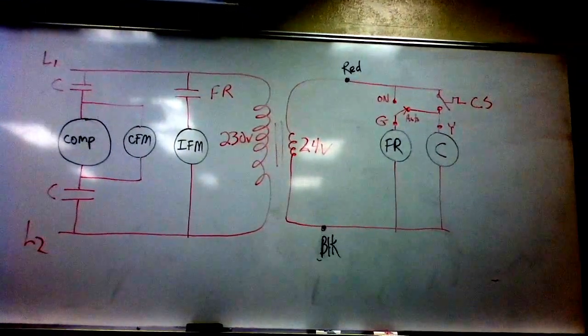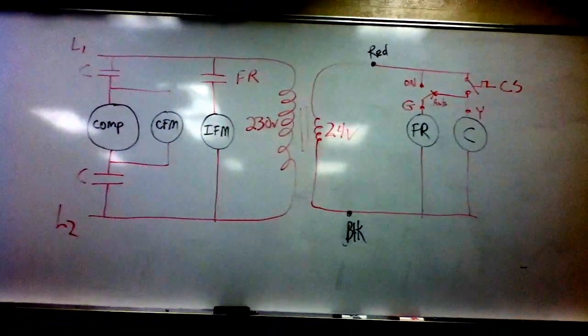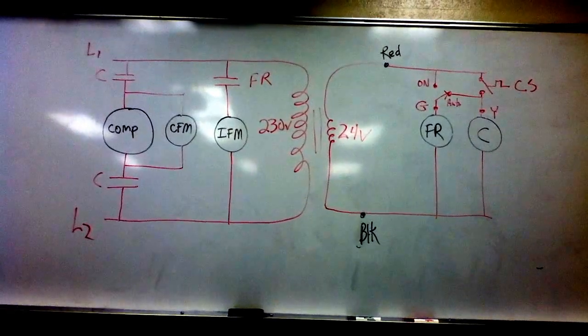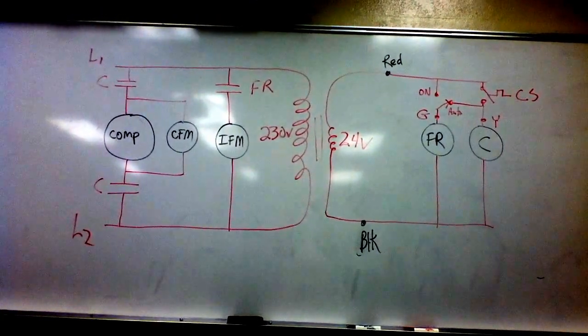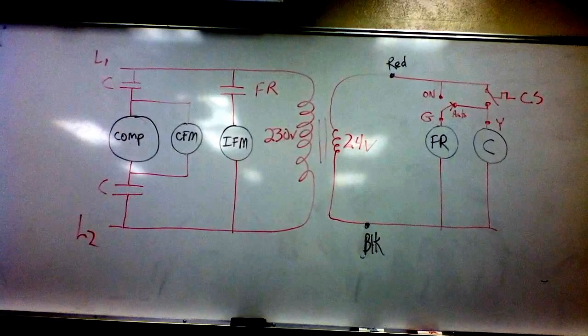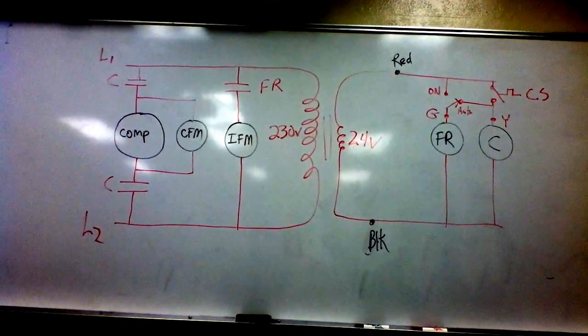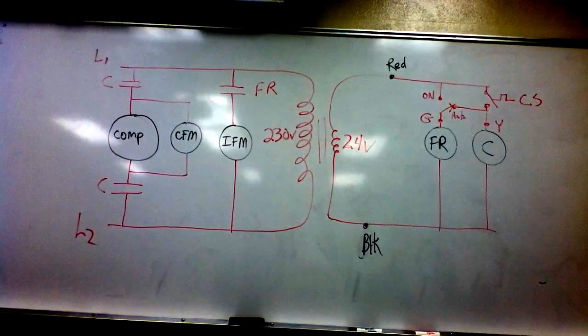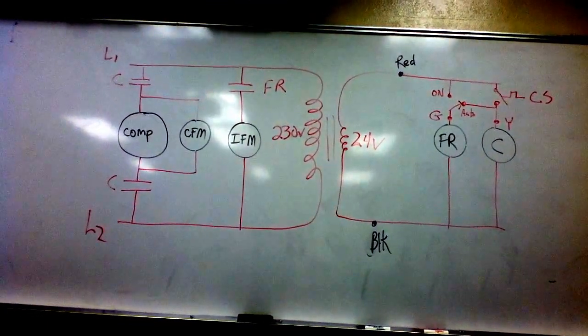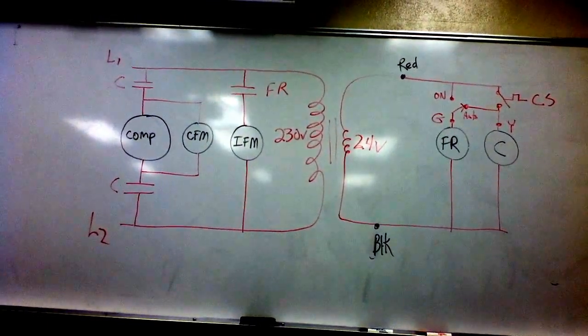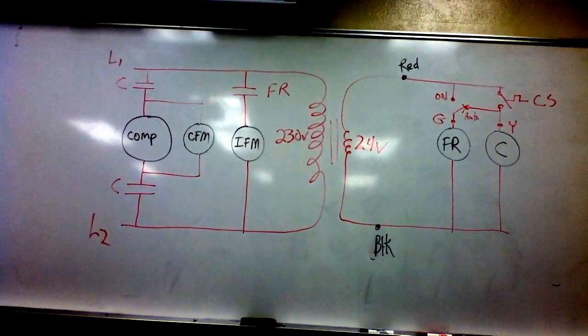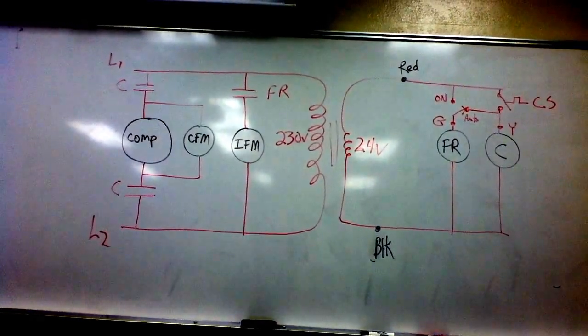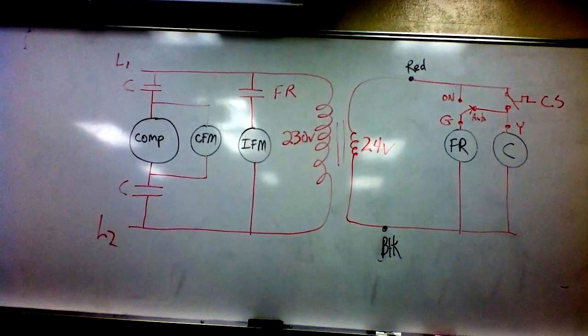Nothing will start until the thermostat closes. Then power comes down through the stat and splits. Part of the power goes to the fan relay coil and back to the other side of the transformer. Part of it goes through the contactor coil and back to the other side of the transformer. So the first thing that goes is the fan relay. Well, at the same time it does the fan relay, it does the contactor coil.